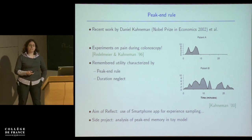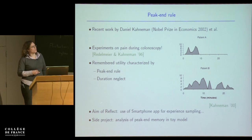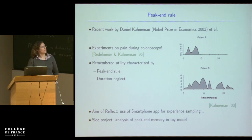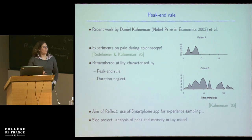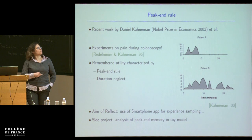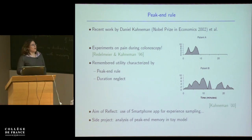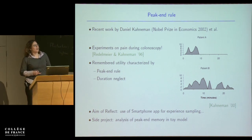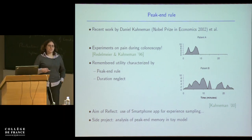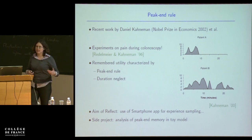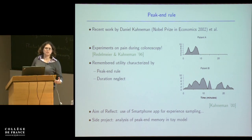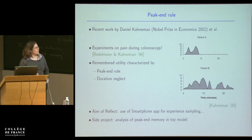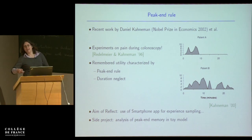What they found was that a very good predictor for how people rated the whole experience was simply to take the peak — how unpleasant the worst bit was — and the end — what the level of pain was in the last minute or two — and take some kind of average of these. In particular, the length of the experience didn't seem to be too important: that's what people call duration neglect. So one patient who had a shorter but sharper procedure reported a much worse experience than one with a longer but gentler ending — seemingly because they had a much gentler time at the end.